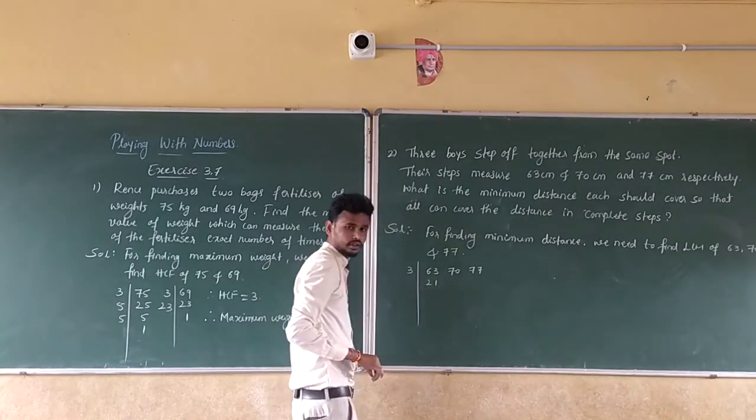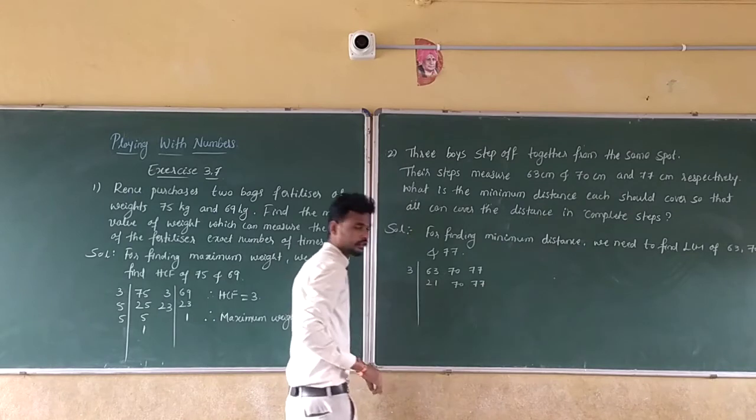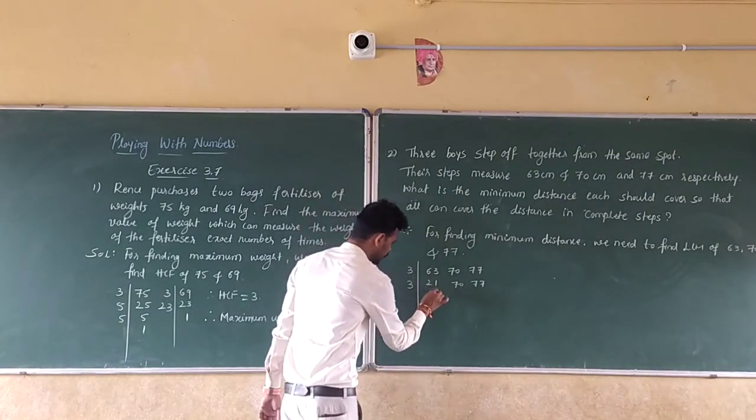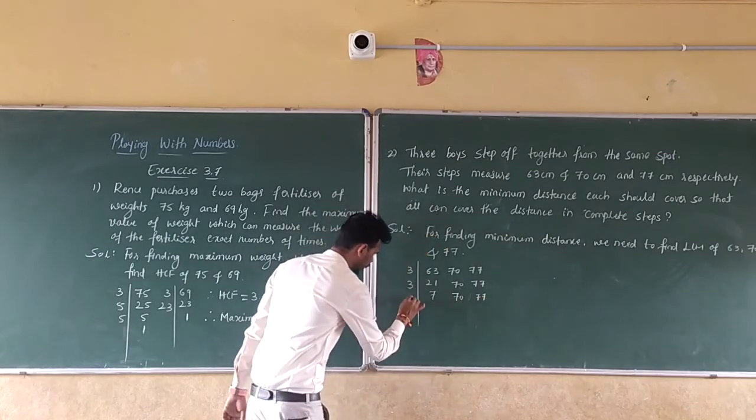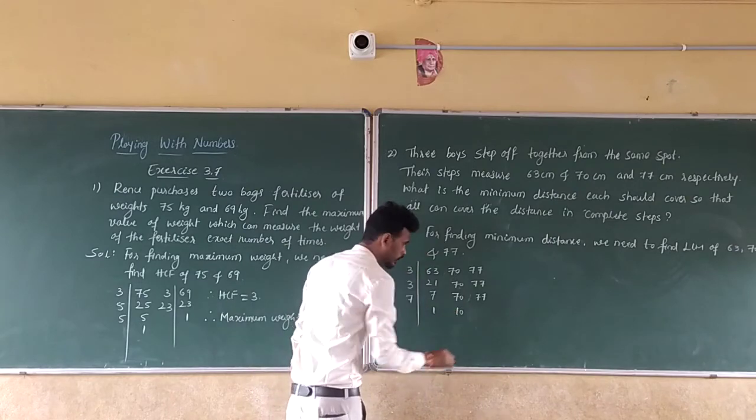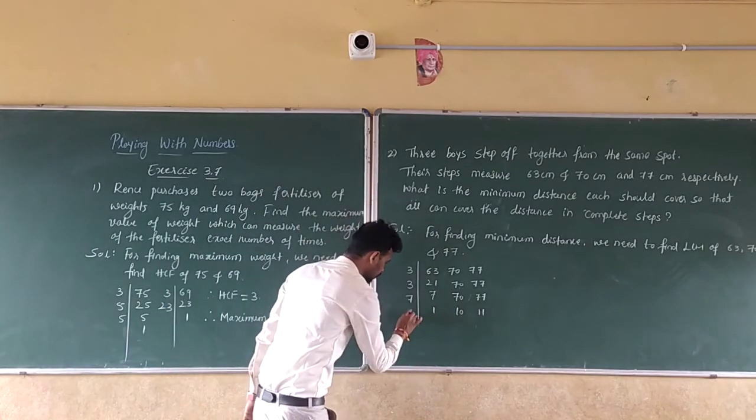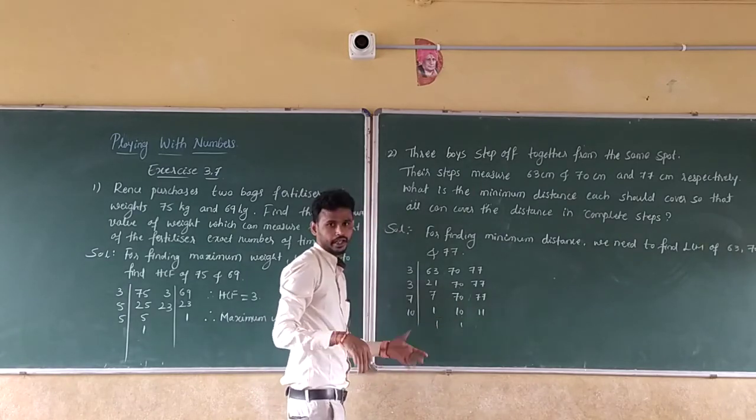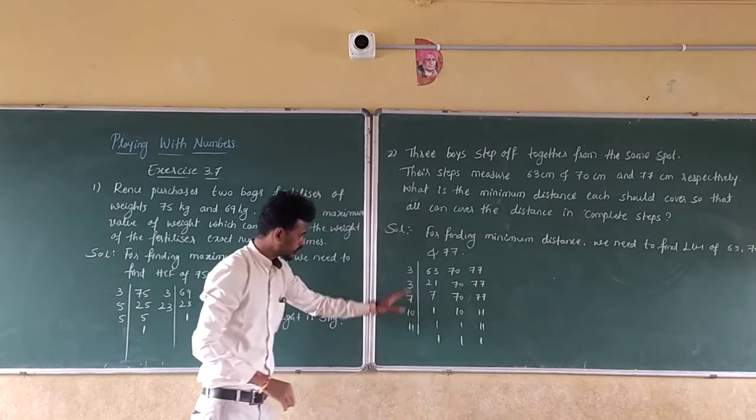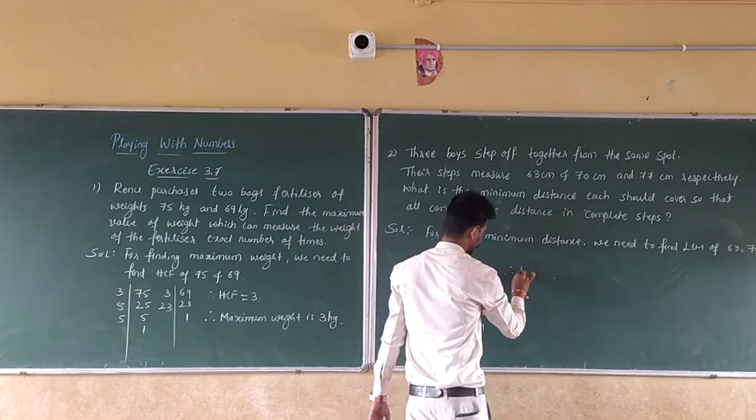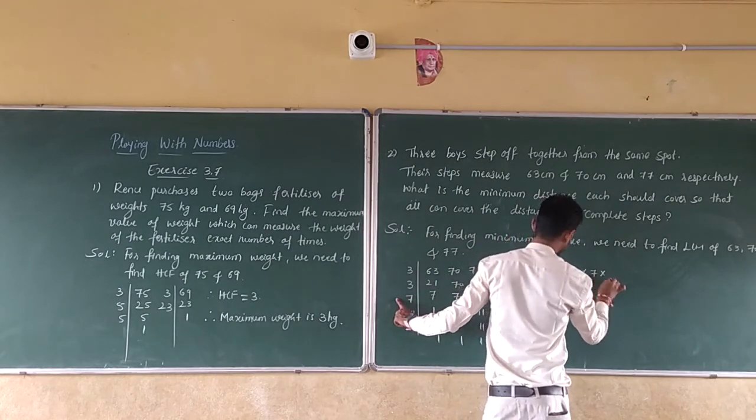Next, divide by 2: 2 divides 10 to get 5, keep 3 and 11. Next, divide by 3: we get 1, keep 5 and 11. Then divide by 5: we get 1, 1, and 11. Finally, divide by 11: we get 1, 1, 1. So the factors are 3, 7, 2, 3, 5, and 11. Multiply: 3 times 7 times 2 times 3 times 5 times 11.